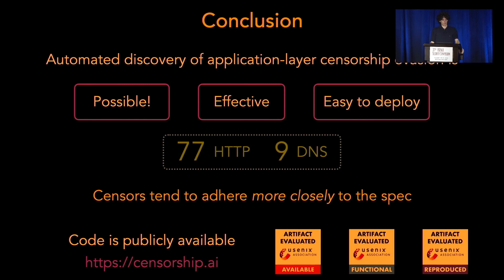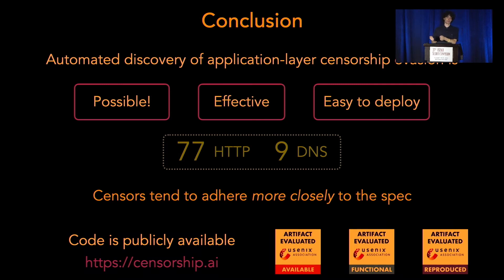In conclusion, the application layer is a great space to find evasion strategies. We've shown that application layer censorship evasion is possible, effective, and super easy to deploy. A great source of evasion strategies comes from sensors following the protocol stricter than end servers, and that's really good news for censorship evasion. Our code is available, and I'll take your questions.